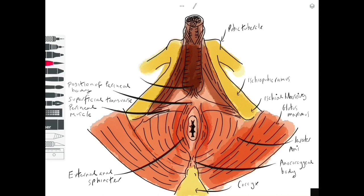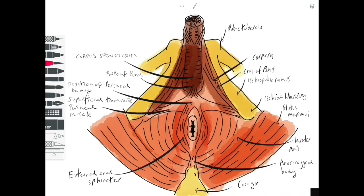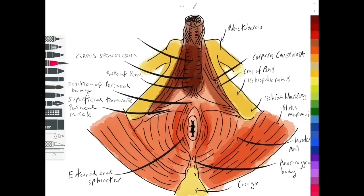Sitting in the middle of that is another ligamentous structure called the perineal body. Adhered to the perineal membrane we have erectile tissue — the bulb of the penis is anchored to the perineal membrane and is continuous with the erectile tissue known as the corpus spongiosum. We also have two crura of the penis which anchor the erectile tissue to the perineal membrane, and these are a direct continuation of more erectile tissue called the corpora cavernosa.